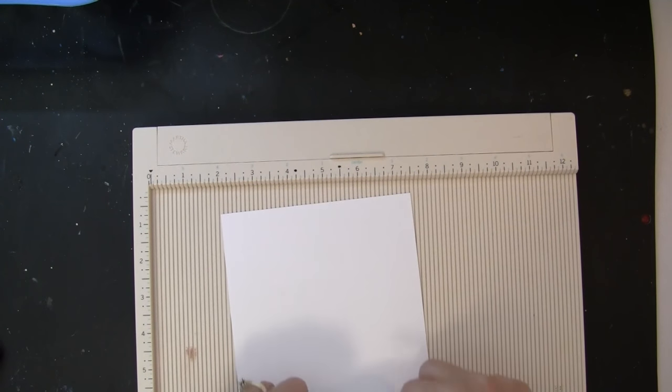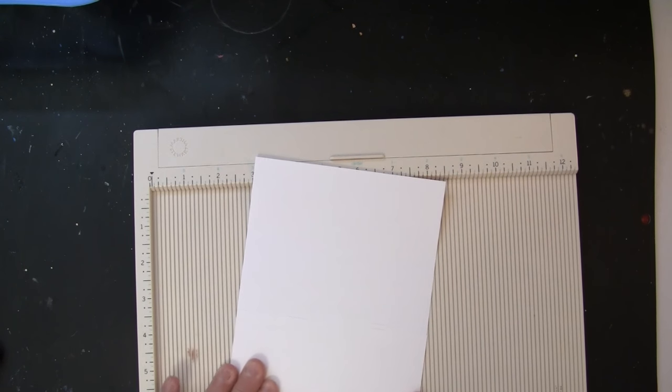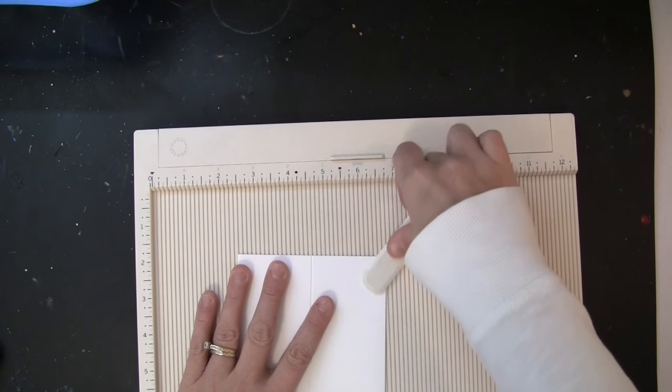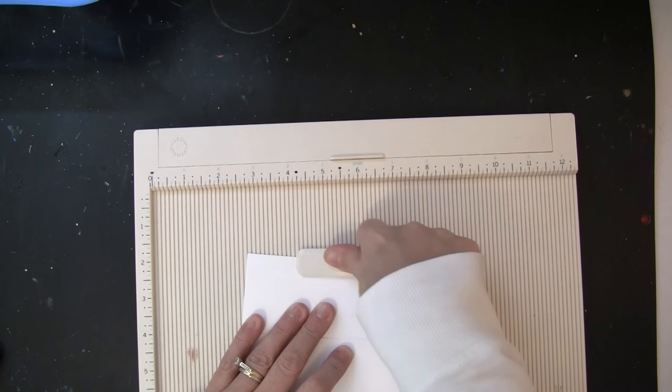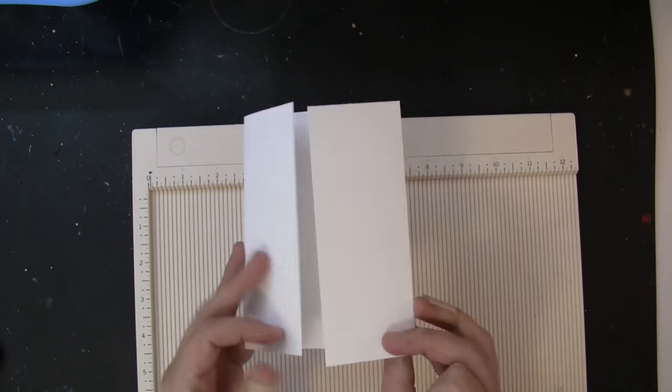So once I've scored those, I can just go ahead and fold them towards the center and it will be ready to go. When I work on that center panel, that will just be adhered down on one side of that gatefold card base, and I'll show you more of that at the end of the video.